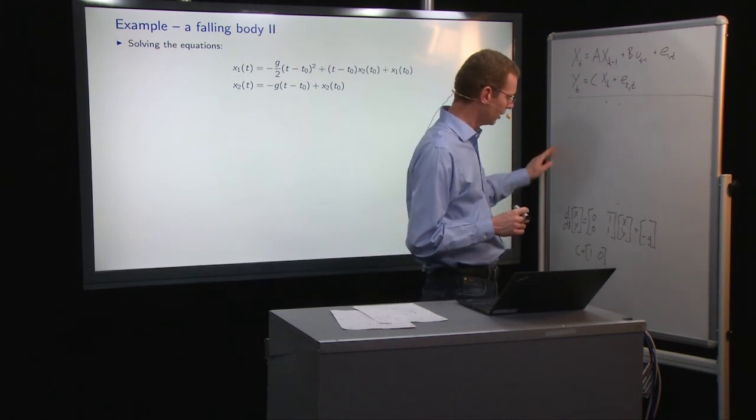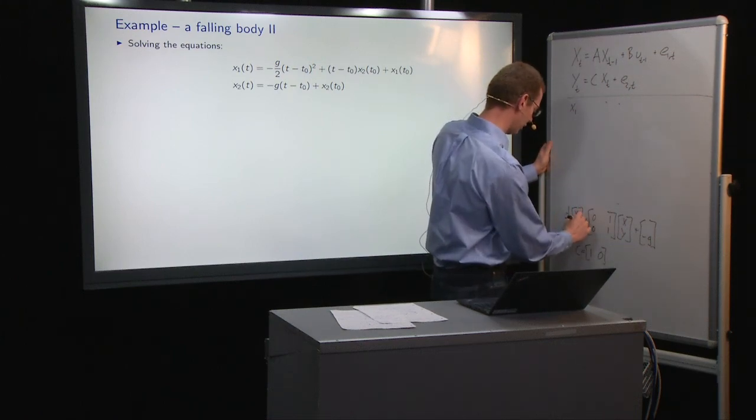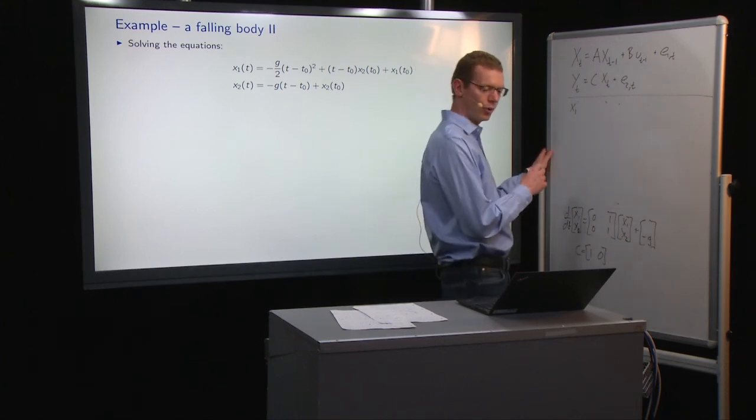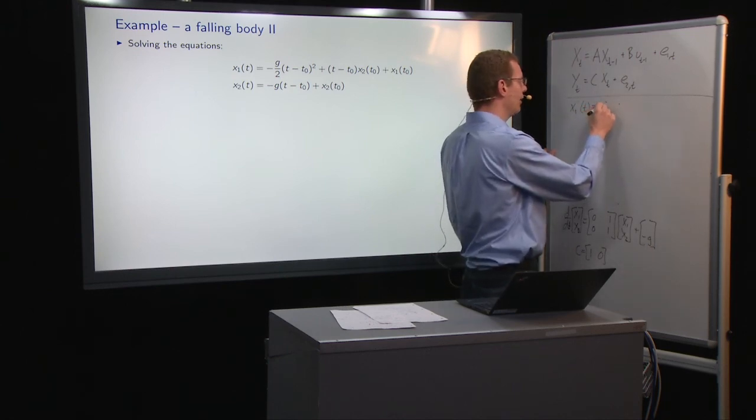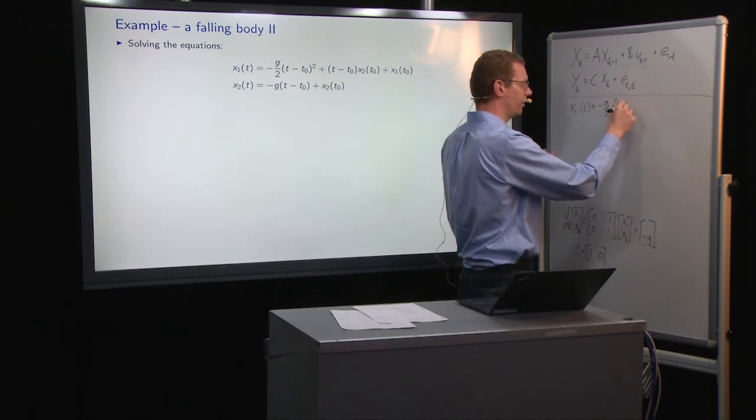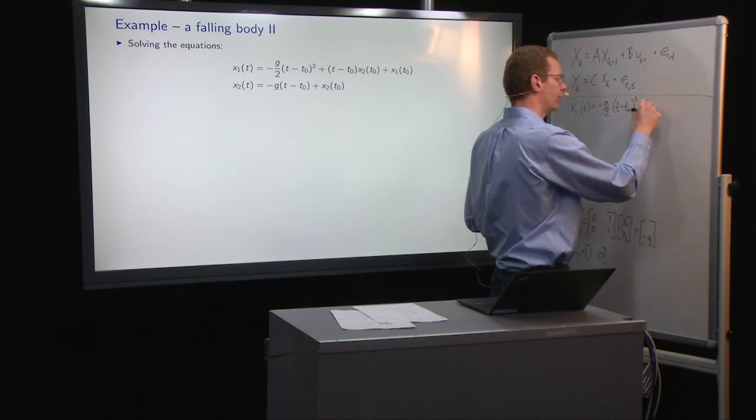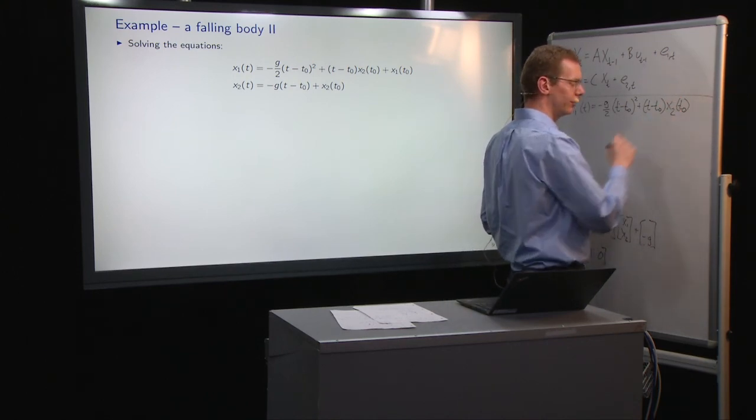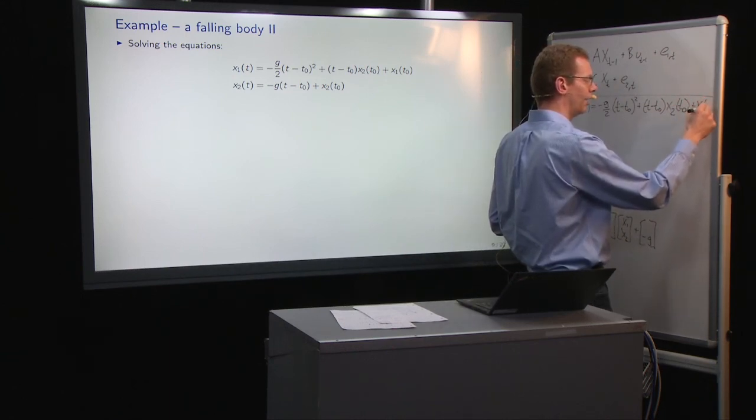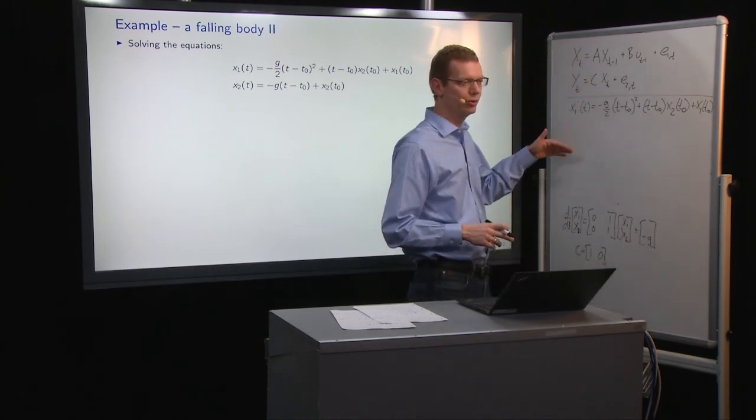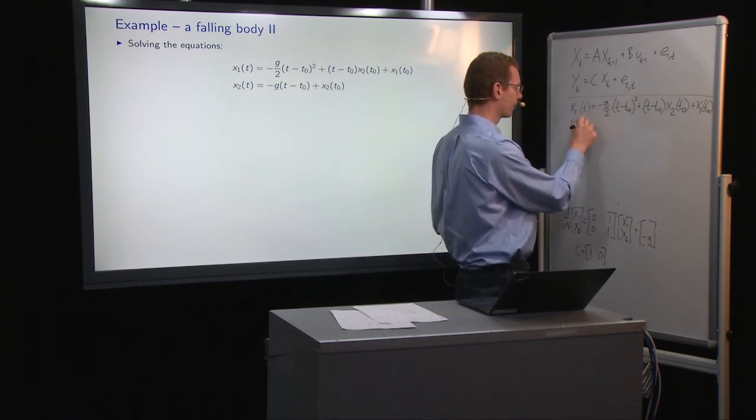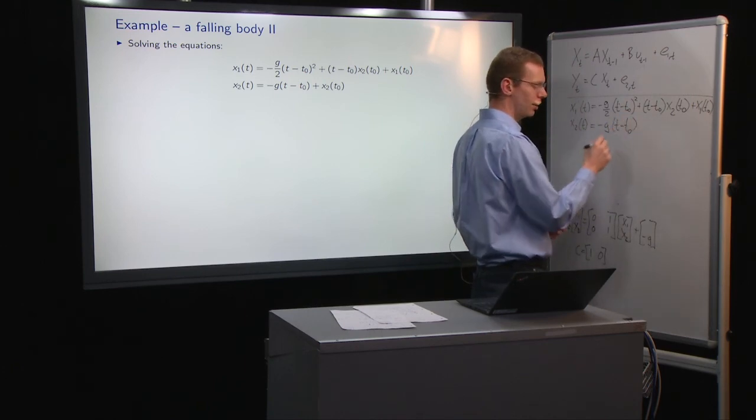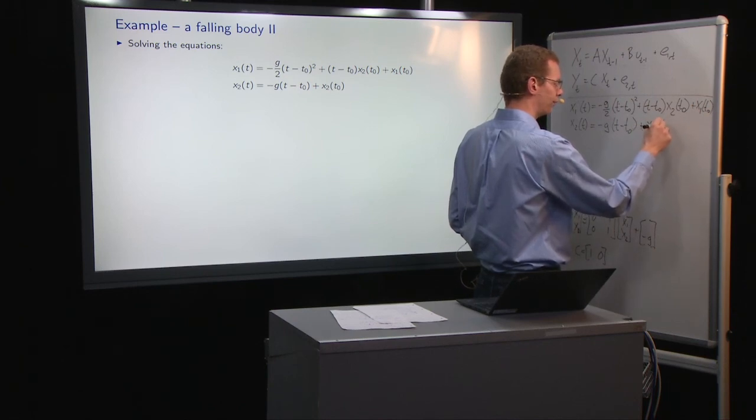So what we get is that we get x1 as being the position. We can also call it x1 here and x2 there, x1, x2. And then the notation is the same. So x1 at time t equals minus g half (t minus t_naught) squared plus (t minus t_naught) times the initial velocity, which is x2 at t0, and then comes a plus x1 at time t0, so the initial height. So that's the solution for the position and the solution for the velocity. x2 of t is equal to minus g, how much time has evolved since the beginning of time, plus the initial velocity x2 of t0. So that's the system that we're dealing with.